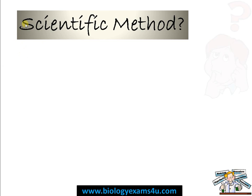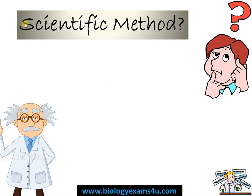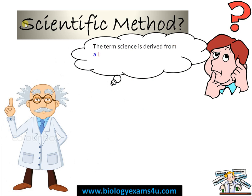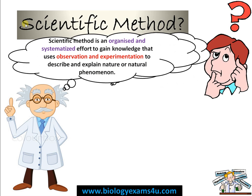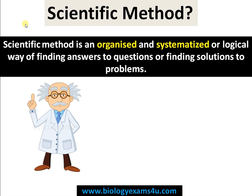Starting with the word meaning: science is a term derived from the Latin word 'scientia,' which means to know or knowledge. The scientific method is an organized and systematized effort to gain knowledge that uses observation and experimentation to describe and explain nature or natural phenomena. Simply put, it is an organized effort to find answers to questions or solutions to problems.